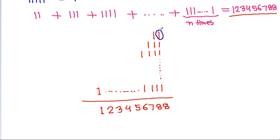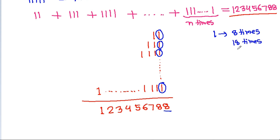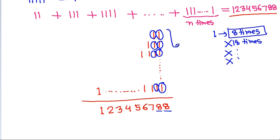Now, 1 + 1 + 1 + 1 + 1 ... sums to 8. That means it cannot be 18, 28, 38, and so on — it should be exactly 8. That means there are 8 rows.